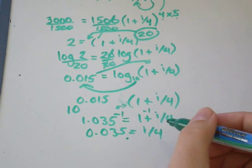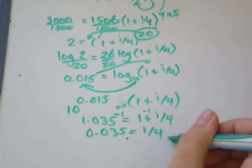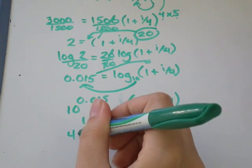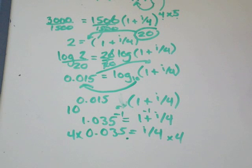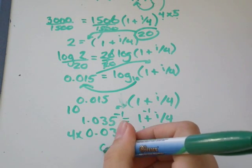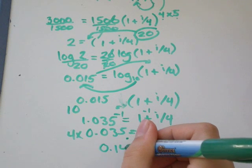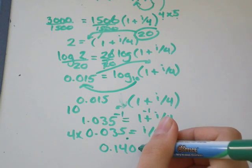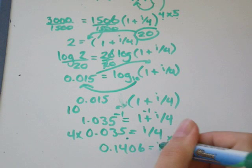So the opposite of dividing by 4 would be to multiply by 4. So I'll multiply both sides by 4. And when I do that, I get 0.1406 is equal to i.